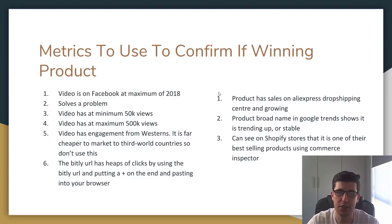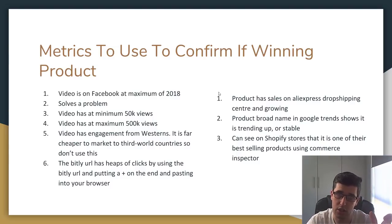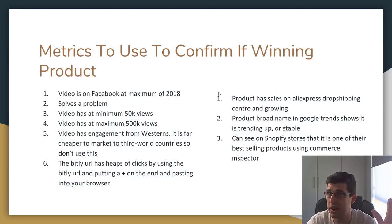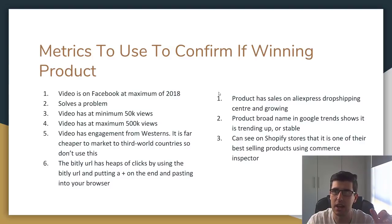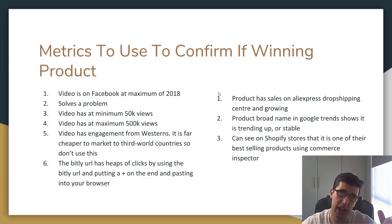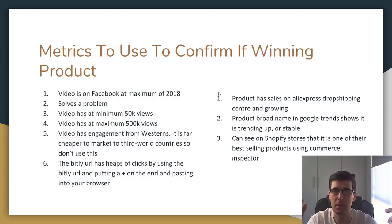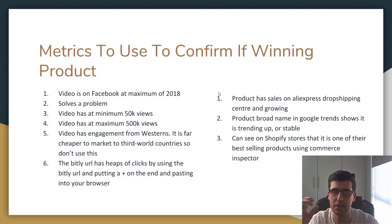A Bitly URL with loads of clicks is another indicator. If someone is using a Bitly URL - or previously a Google URL - you can copy and paste it into a separate tab in your browser and put a plus sign on the end. You can actually see the total amount of clicks it's had, whether it's getting a lot of clicks now or if it's dying out - little back-end indicators. You can also see the countries, which gives an indicator of where they're spending their budget. These little things give you snippets to save you time and money.